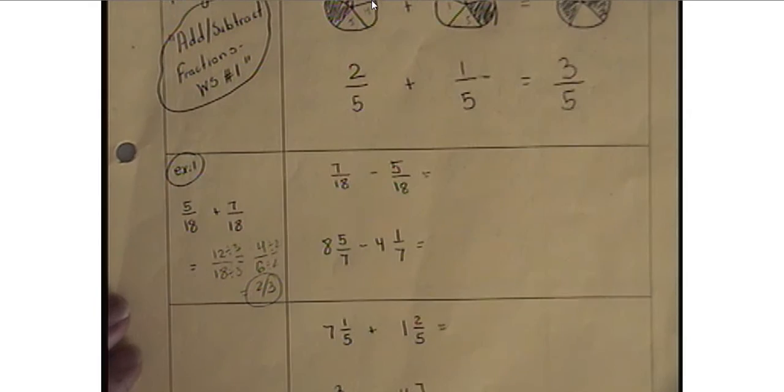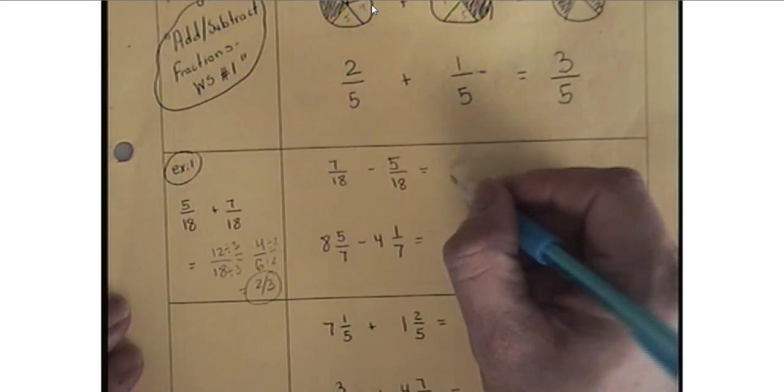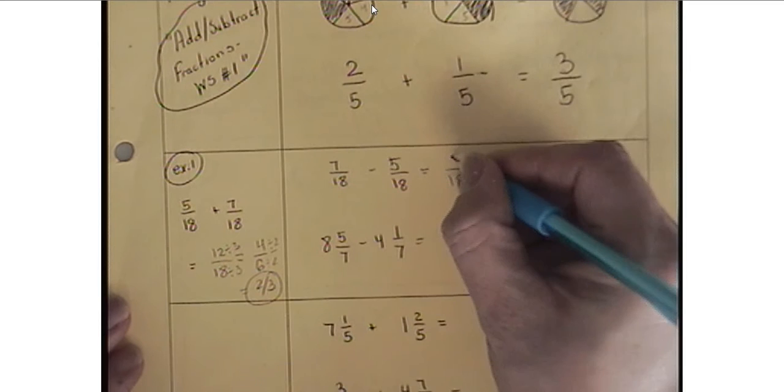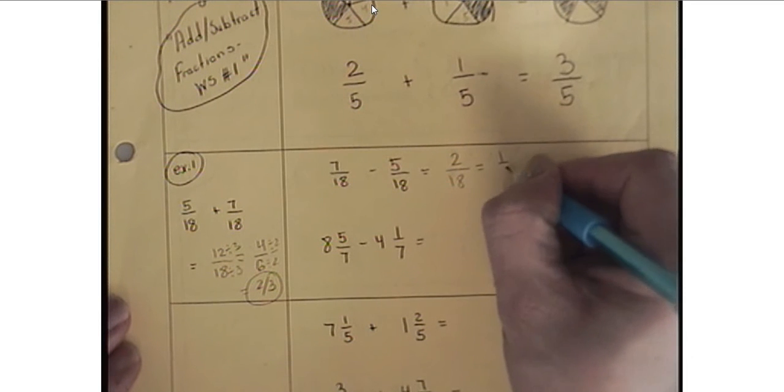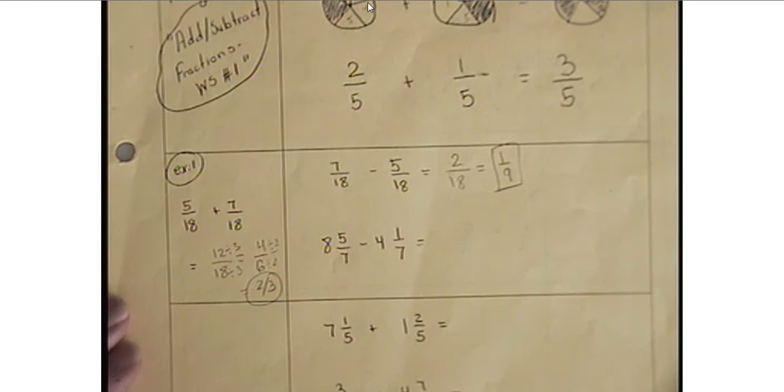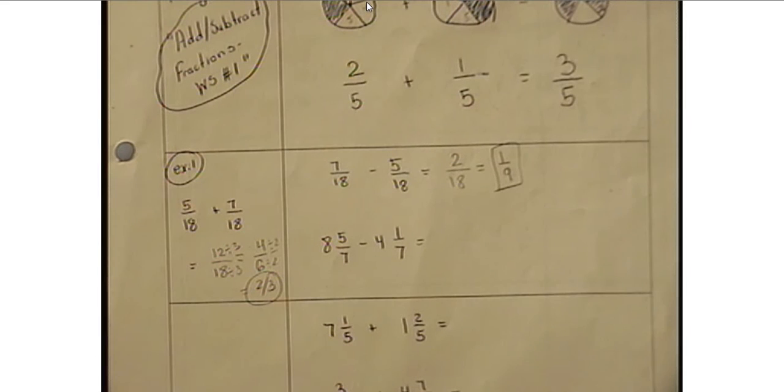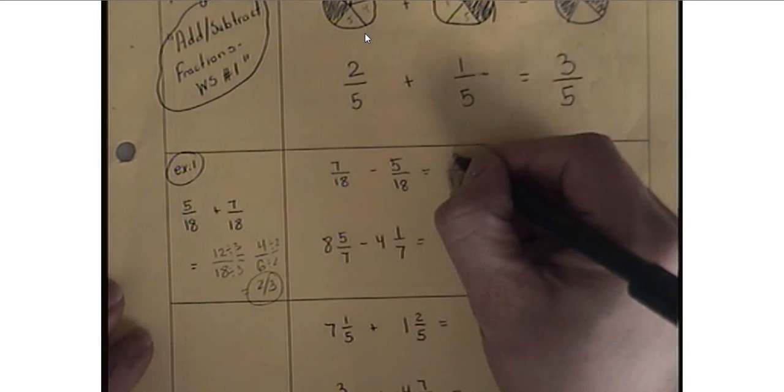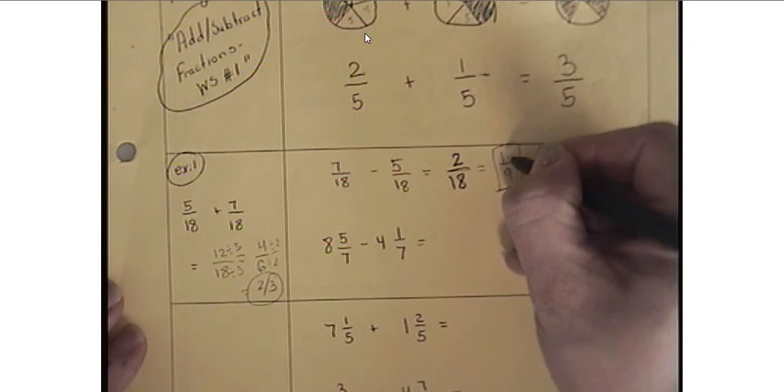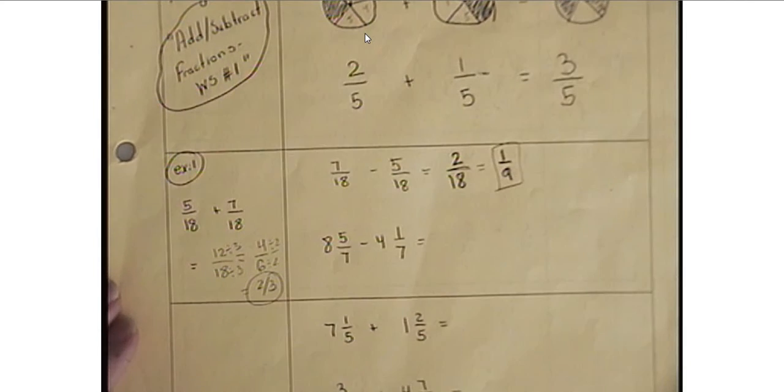Next one. We have subtraction here. Same common denominator. 7 minus 5 is 2, 2/18, which is 1/9 final. Simplest form. Make sure, please, simplify as much as you can. This is our goal. Not just solving, but also simplifying.